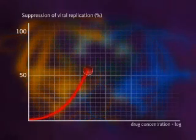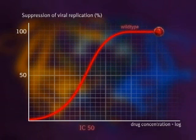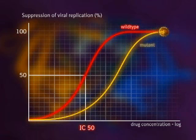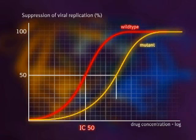As a consequence of resistance, the IC50, the concentration of a drug necessary to reduce the replication by 50%, is higher in the mutant virus compared to wild-type. The difference in replication between wild-type and mutant virus is called change in IC50.